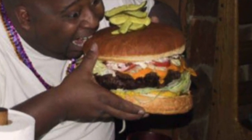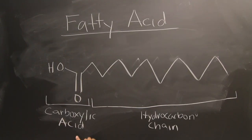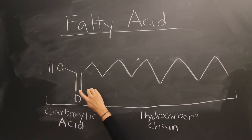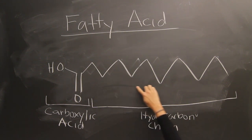What is a fatty acid? Fatty acid is a carboxylic acid, as seen here, where you have a terminal carboxyl group, and the R group is a long hydrocarbon chain.